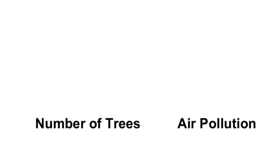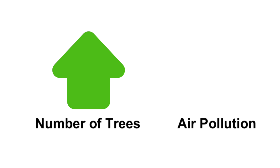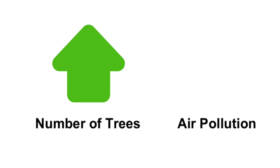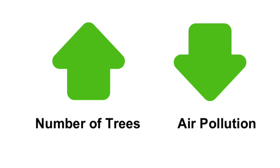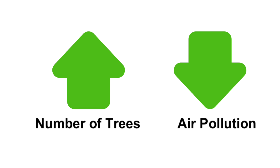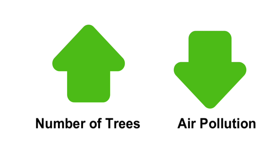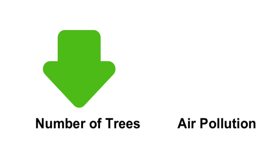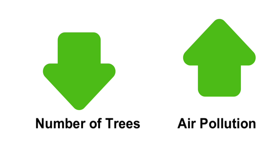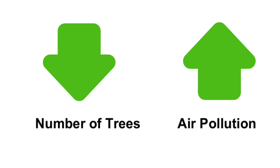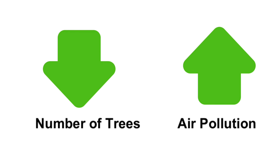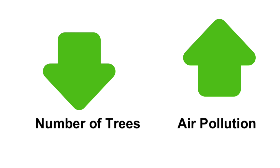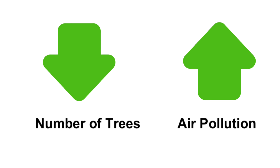Now let's look at another example. Number of trees and air pollution in a given area are inversely proportional to each other, which means that if an area has a greater number of trees, it has less pollution. On the other hand, if that same area has fewer trees, it will have a greater probability of air pollution. So these two are inversely proportional to each other.